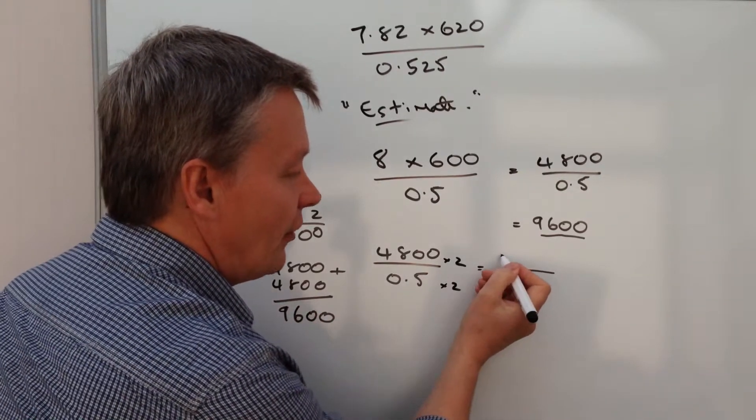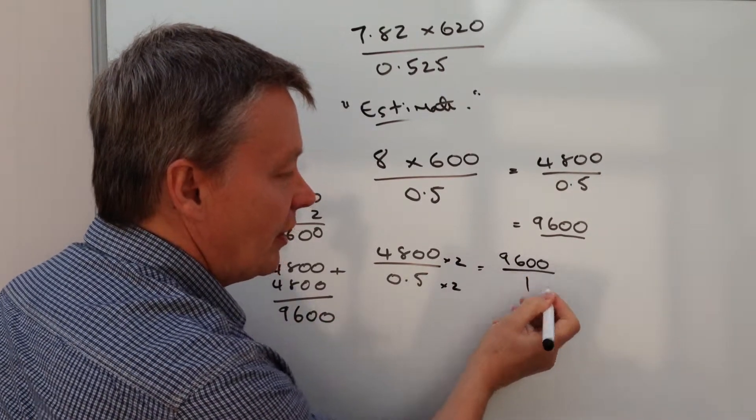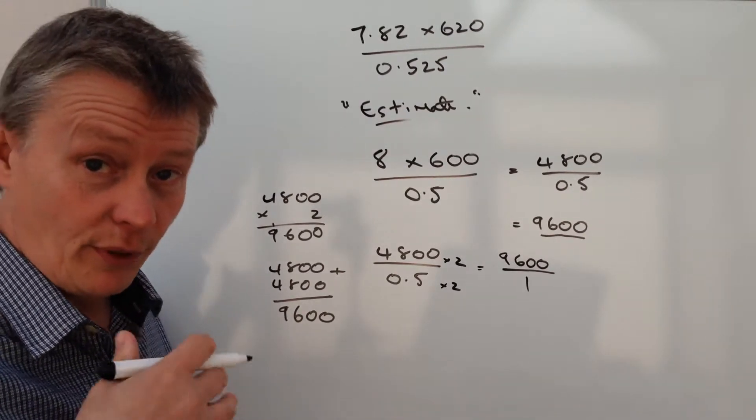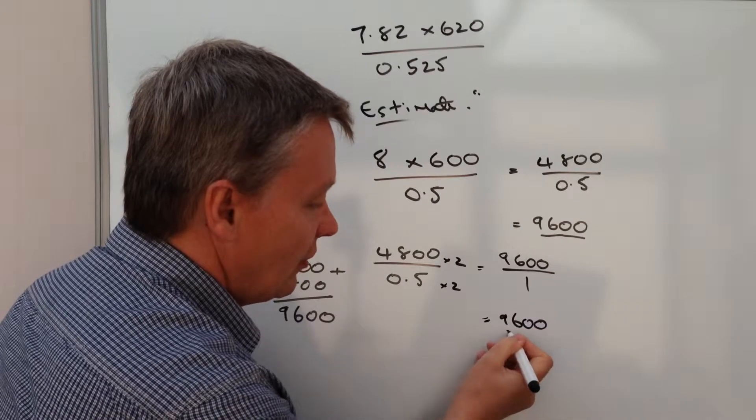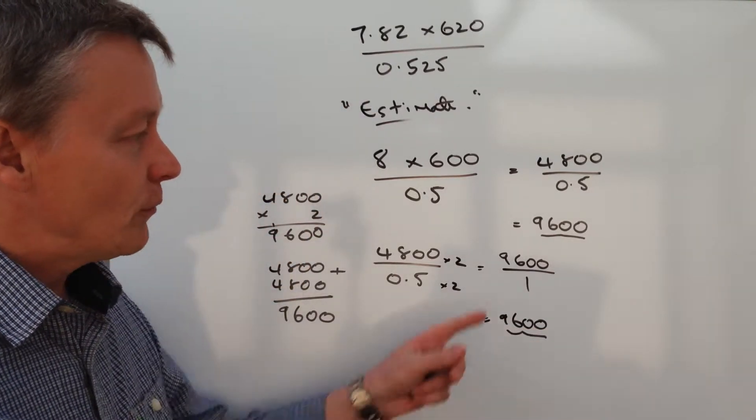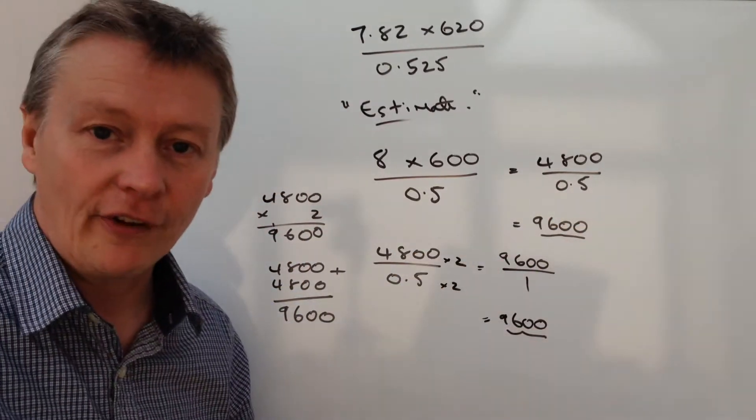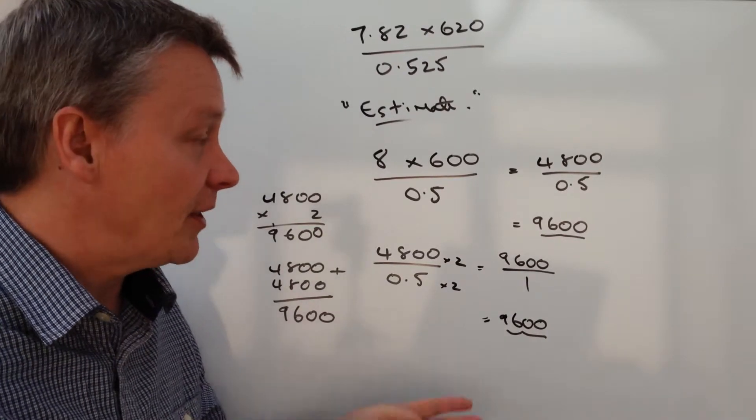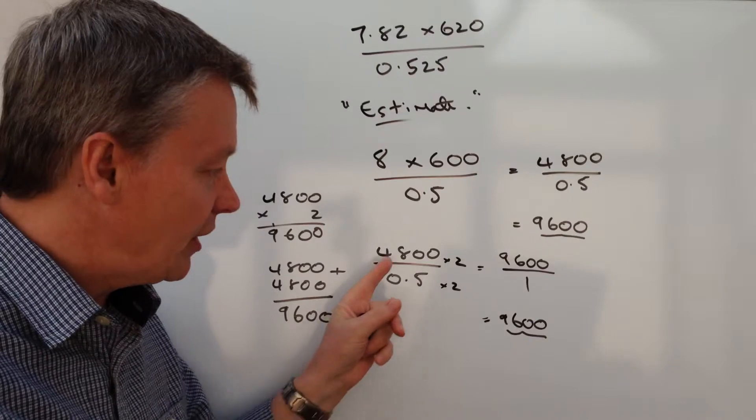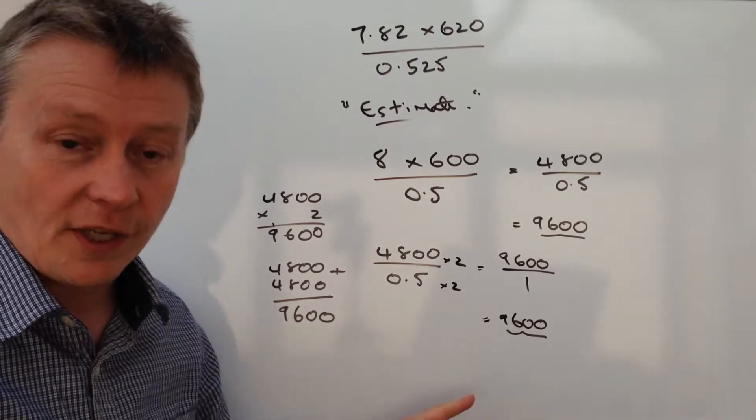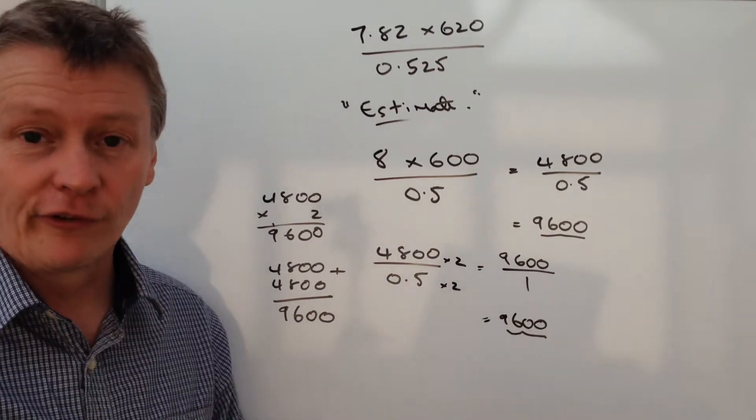But it means that my final calculation is 9,600 divided by 1, which is 9,600. So just because you have a division of a half, or any number for that matter, any decimal, it doesn't really matter, providing you can manipulate the fraction to suit yourself. I hope that's been helpful for you.